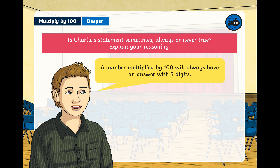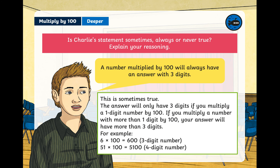Charlie says: 'A number multiplied by 100 will always have an answer with three digits.' Is this sometimes, always, or never true? Pause the video, have a think, and come back for the answer. It is sometimes true — it's only true if you multiply a one-digit number by 100. If you multiply a number with more than one digit by 100, your answer will have more than three digits. For example, six times 100 is 600, but 51 times 100 is 5100.